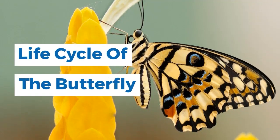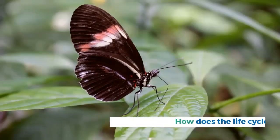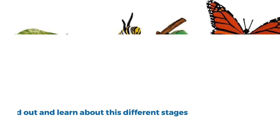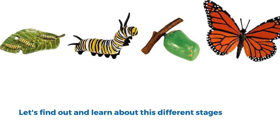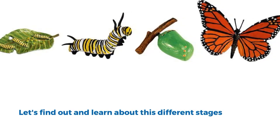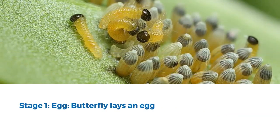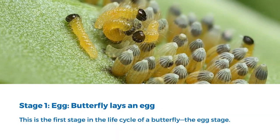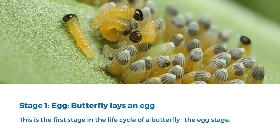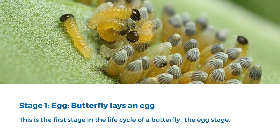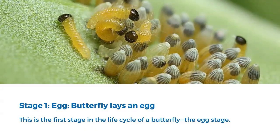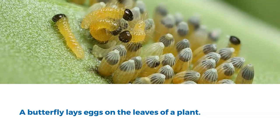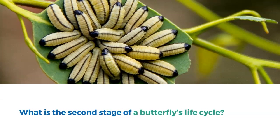Life cycle of the butterfly. How does the life cycle of a butterfly begin? Let's find out and learn about the different stages. Stage 1: Egg. A butterfly lays eggs on the leaves of a plant. This is the first stage in the life cycle of a butterfly.